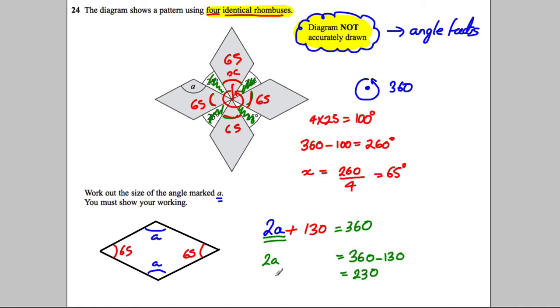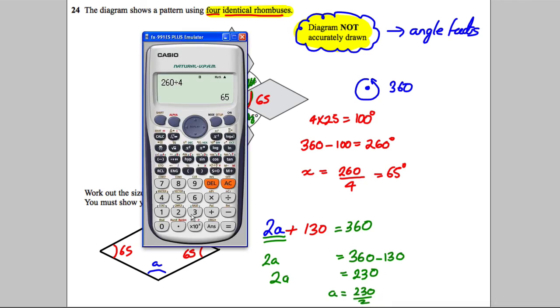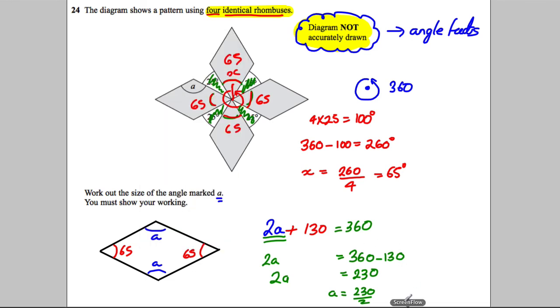So one a must be 230 divided by 2. We just get our calculator, 230 divided by 2 is equal to 115, so 115 degrees.